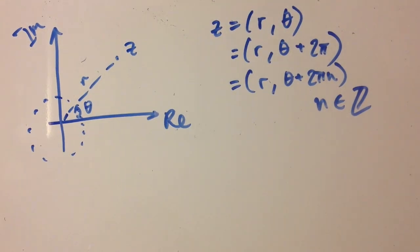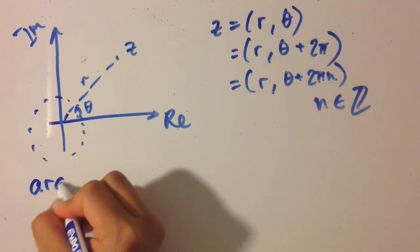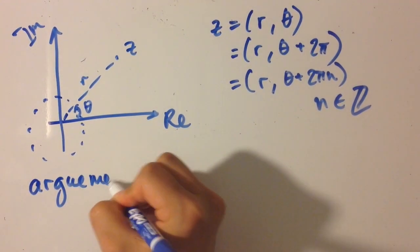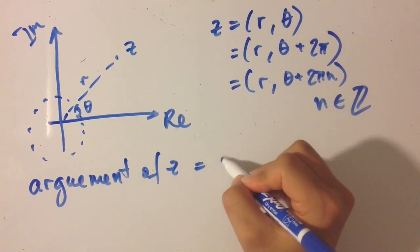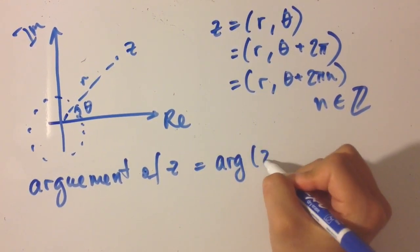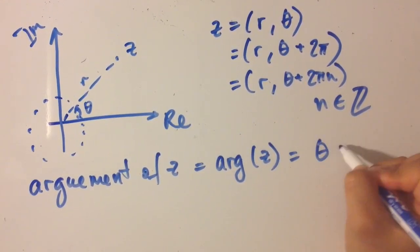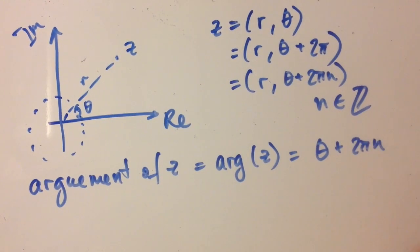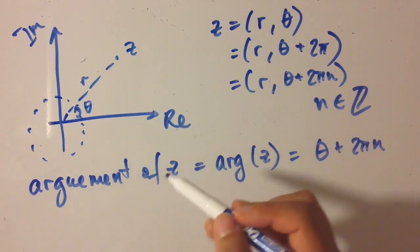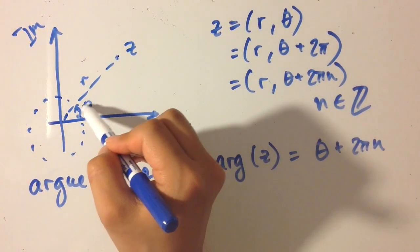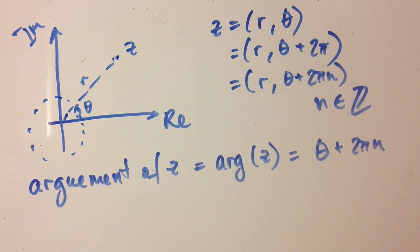Now I will introduce some jargon. Argument of z is given as arg z and is equal to theta plus 2 pi n. So argument z is a set of all possible angles this point could take and still be the same point.